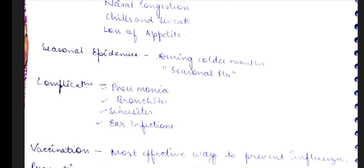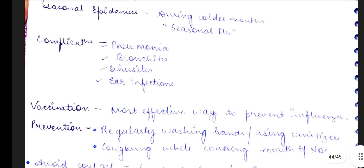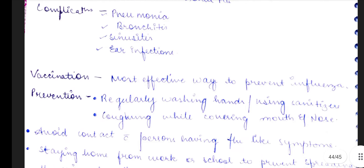Now talking about the complications of influenza — most importantly, it affects the respiratory tract. The four most important complications are pneumonia, bronchitis, sinusitis, and ear infections. Now moving on to vaccination.